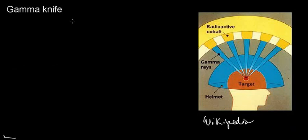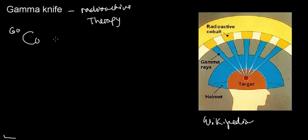This is the gamma knife, and the gamma knife is radioactive therapy. We're using gamma rays that are emitted from radioactive cobalt-60 that emits gamma radiation, and we're focusing this gamma radiation to target a tumor in our brain.